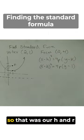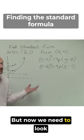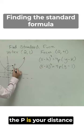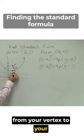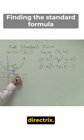So that was our h and our k from what we've done before. But now we need to look at what is our p. Remember, the p is your distance from your vertex to your focus, and it's also a distance from your vertex to your directrix.